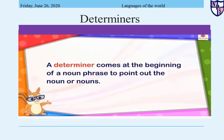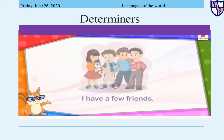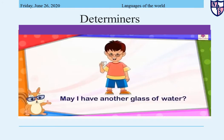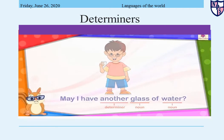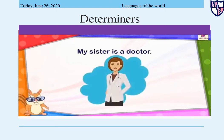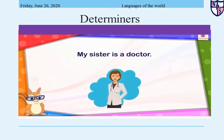A determiner comes at the beginning of a noun phrase to point out the noun or nouns. For example: 'I have a few friends.' 'May I have another glass of water?' A determiner tells us whether the noun phrase is specific or general. For example, in 'My sister is a doctor,' 'my' is a specific determiner and 'a' is a general determiner.